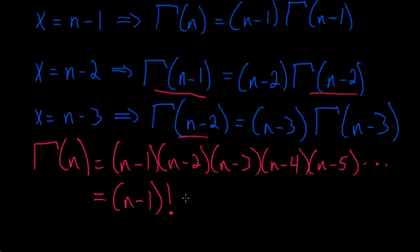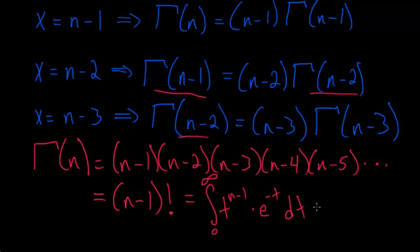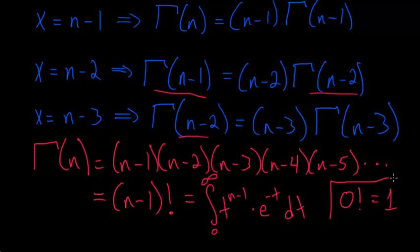So, remembering that gamma of n equals the integral from 0 to infinity of t to the n minus 1 multiplied by e to the minus t, dt, it is out of this that we get the result that 0 factorial is equal to 1. In the next video, I will show you how we can prove this.